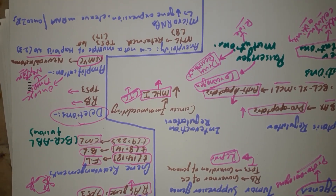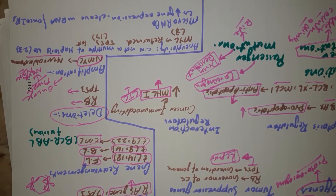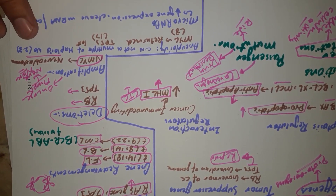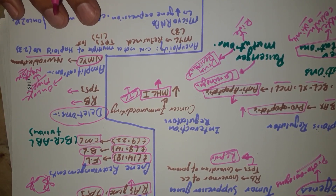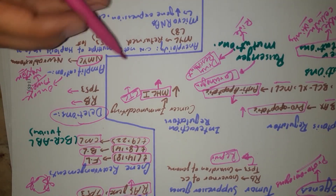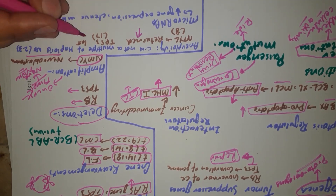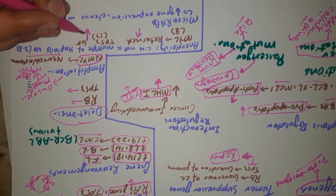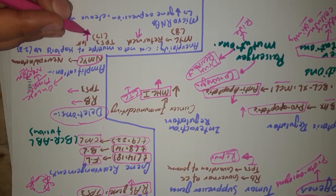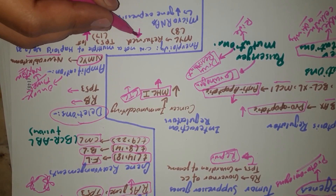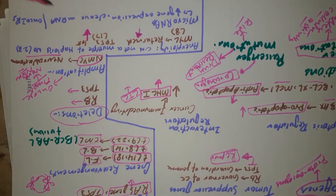In carcinogenesis involving aneuploidy, genes which increase cellular growth are retained, while genes which suppress cellular growth are decreased. When tumor suppressor genes are decreased and tumor-promoting oncogenes increase, they lead to increased cellular production.